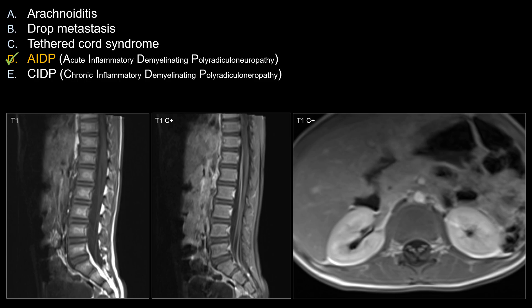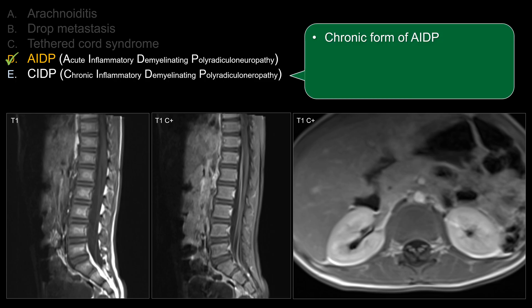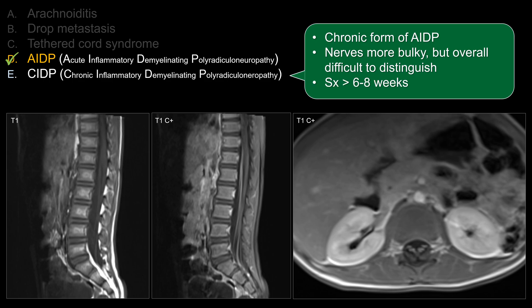Let's look at some of the choices that do not work as well in this case. Perhaps the main image in the differential diagnosis is CIDP, chronic inflammatory demyelinating polyradicular neuropathy. This is considered the chronic form of Guillain-Barré. The nerve roots tend to be more bulky for CIDP, but overall it can be very difficult to distinguish on imaging alone. So the clinical context is important.